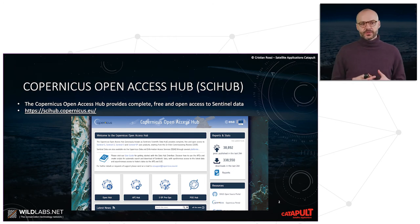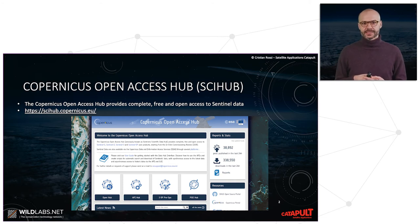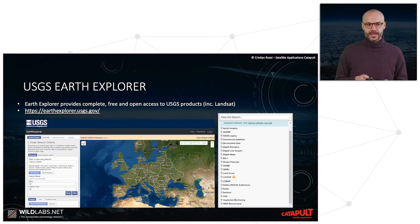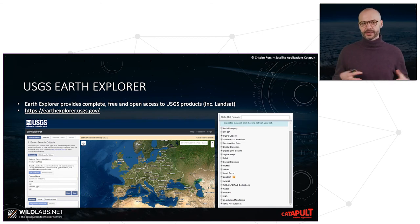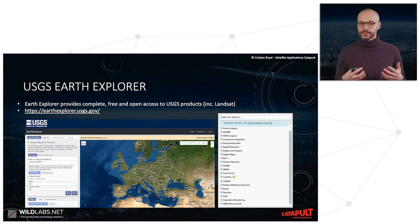As shown in previous videos, there are different Sentinel missions — but how do we actually get this data? The first platform is called the Copernicus Open Access Hub (C-Hub). Landsat data can be downloaded through the USGS platform called Earth Explorer. These platforms usually require user registration, but data can then be easily downloaded.